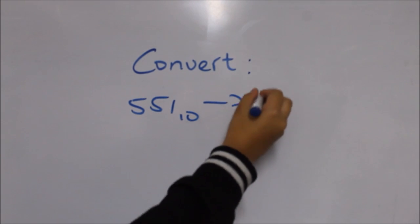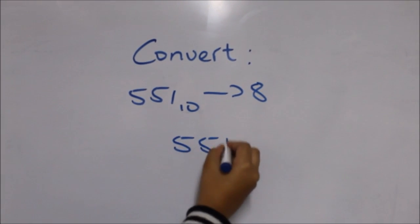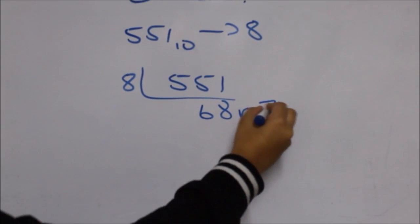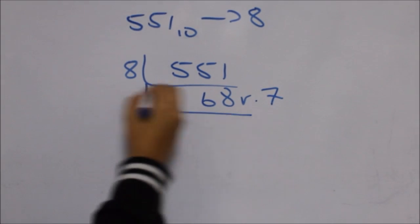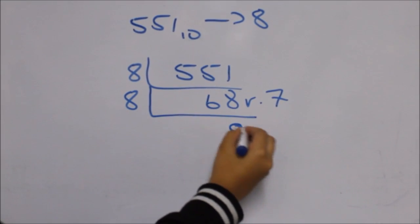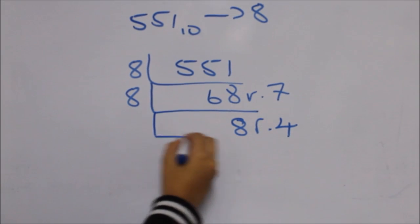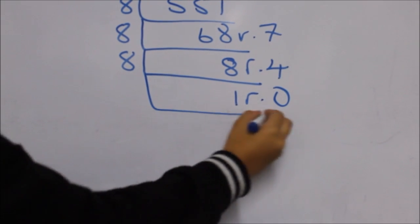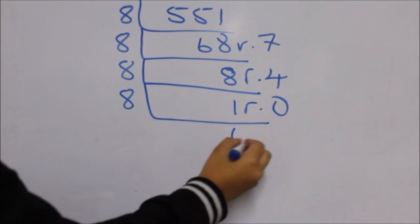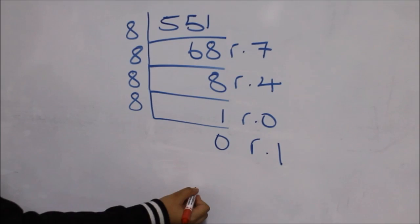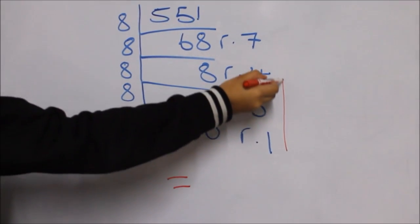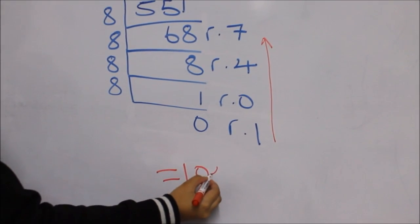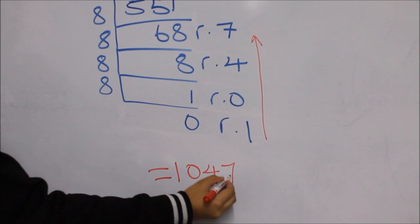Let's try another. Convert 551 base 10 to base 8. Start long division: 551 divided by 8, you get 68 remainder 7. Continue dividing by 8, you get 8 remainder 4. Continue dividing by 8, you get 1 remainder 0. Continue dividing by 8, you get 0 remainder 1. Reading the remainders going upwards, the answer is 1047 base 8.